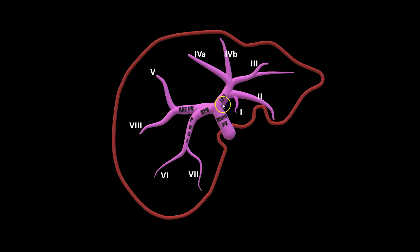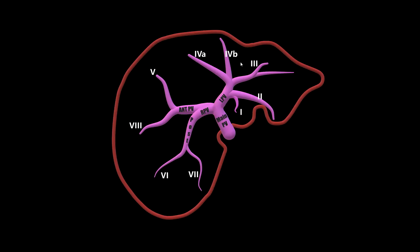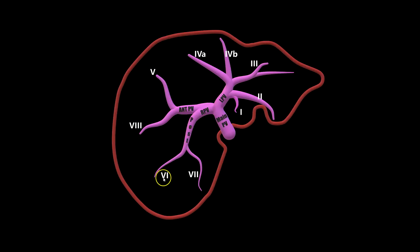The main portal vein bifurcates into right and left portal veins, and the right portal vein bifurcates into anterior and posterior segments. The left portal vein is going to feed segment one — the caudate lobe — and segments two and three, which are the superior and inferior lateral left lobe. It also feeds segment four and four A, the medial segments of the left lobe. The right portal vein bifurcates into anterior and posterior branches: the anterior branch feeds segments five and eight, and the posterior branch feeds segments six and seven.